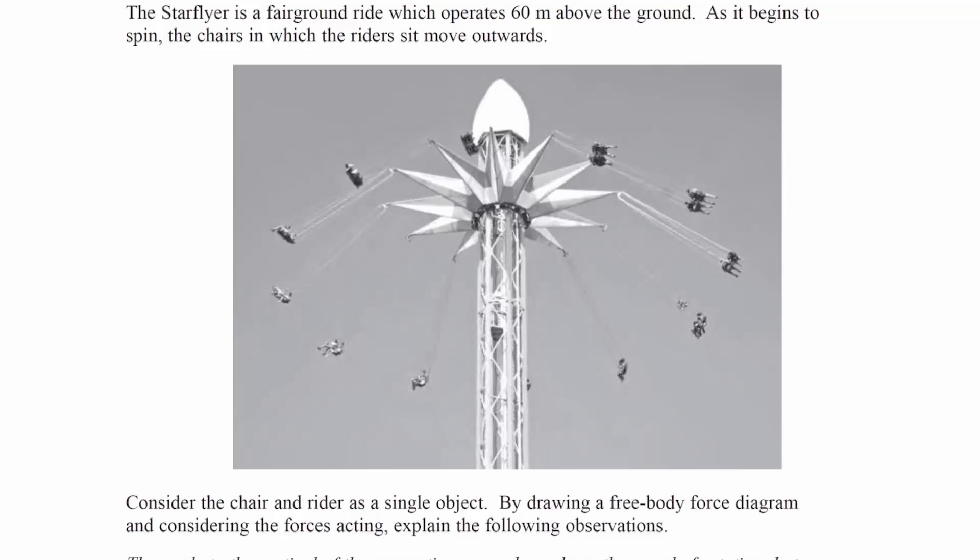The Star Flyer is a fairground ride which operates at 60 metres above the ground. As it begins to spin, the chairs in which the riders sit move outwards, as we can see in the diagram.